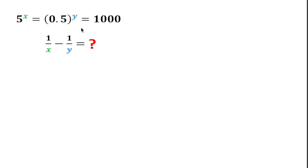Welcome to definite mind. This question can be solved in many ways but I will give you the best solution in this video. We can write 5^x = 1000 and 0.5^y = 1000.